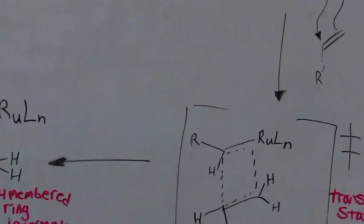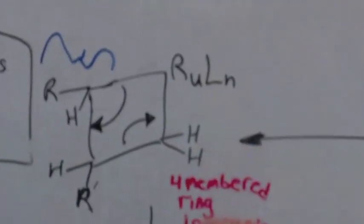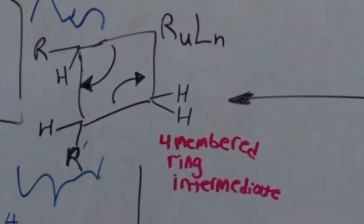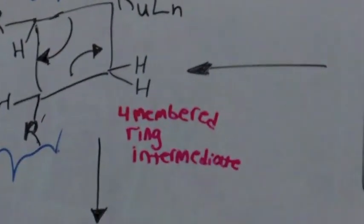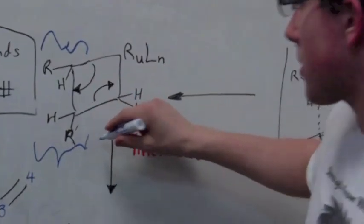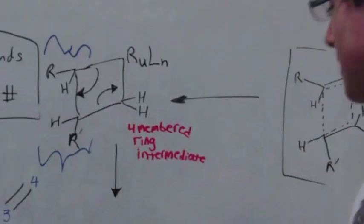And it also notes what's given here, which is the setup for our products being in the E configuration, with the R groups opposing and ending in this configuration once the electrons move.